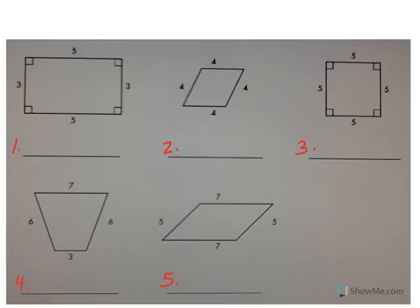Now let's check your answers. Number one, of course, is a rectangle because both pairs of sides are parallel and it also has four right angles. Number two is a rhombus because both pairs of sides are parallel and it also has four equal sides.